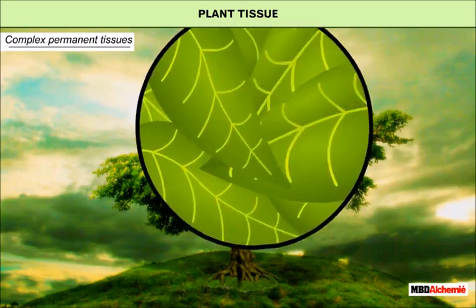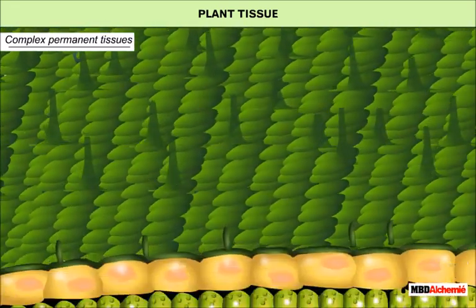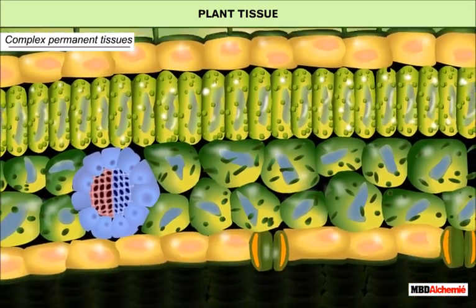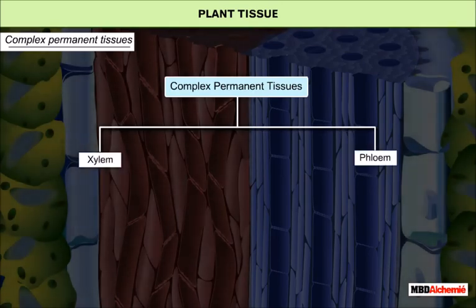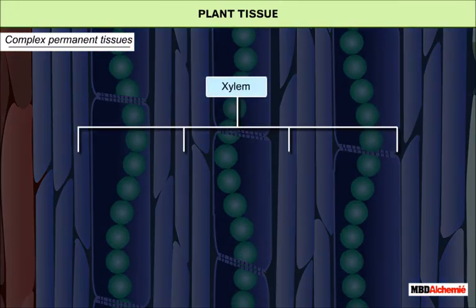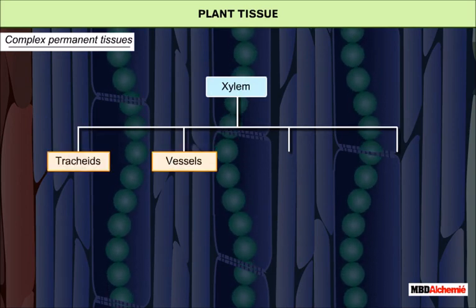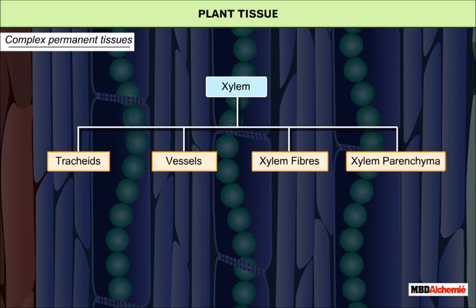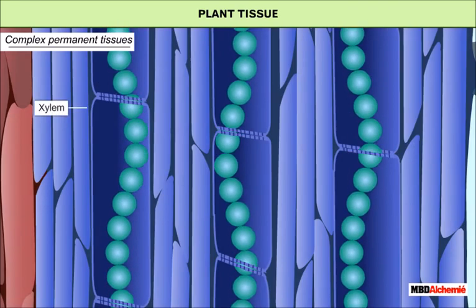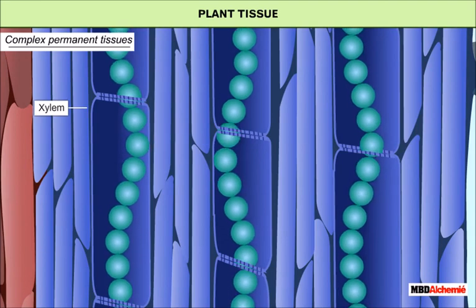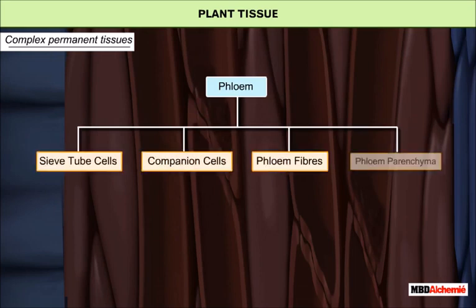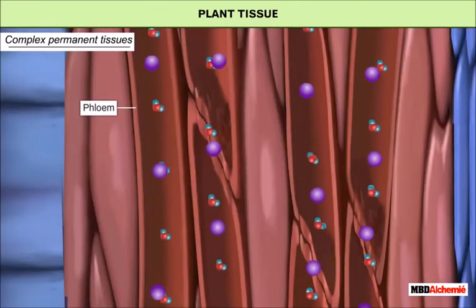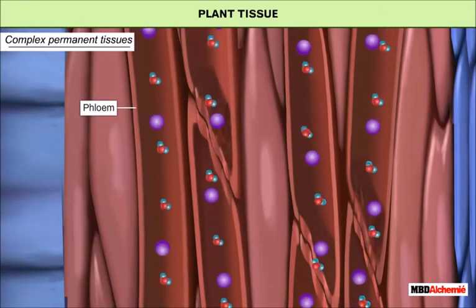Complex permanent tissues are characterized by different kinds of cells functioning in a coordinated manner. Complex permanent tissue is of two types: xylem and phloem. Xylem is formed of four types of cells — tracheids, vessels, xylem fibers and xylem parenchyma — and carries water and minerals from the roots to different parts of the plant. Phloem is also formed of four types of cells — sieve tube cells, companion cells, phloem fibers and phloem parenchyma — and helps in conduction of food within the plant body.